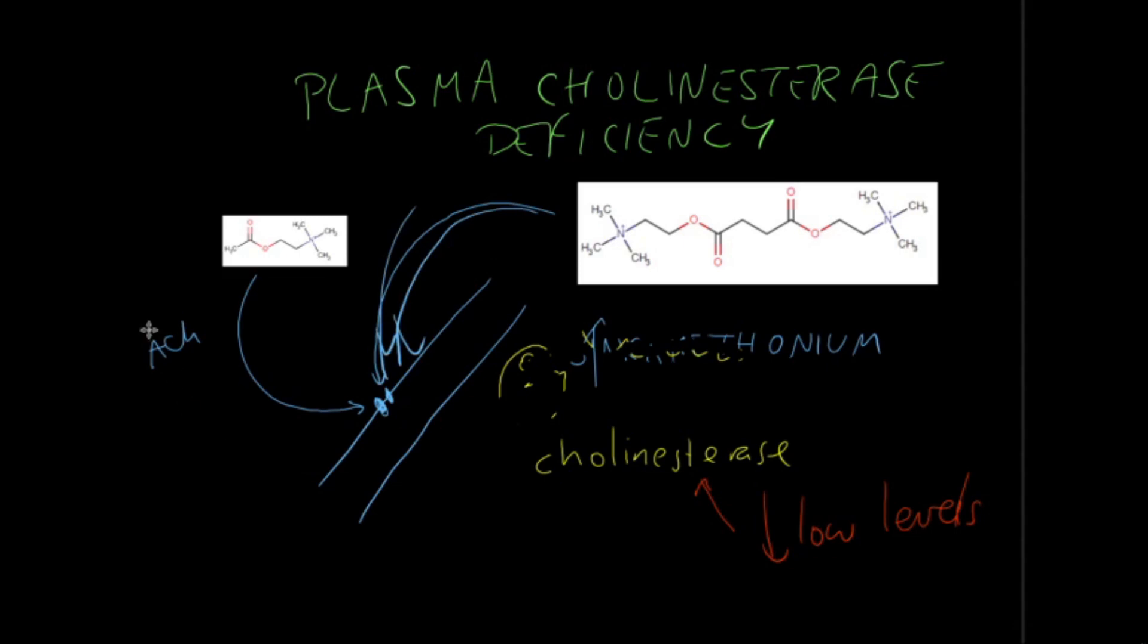Another example is called acute intermittent porphyria. What happens here is we have a bunch of compounds inside called porphyrins. They're not usually that toxic, but they are broken down into heme.